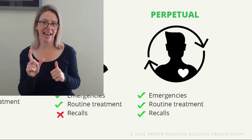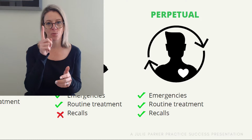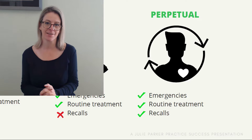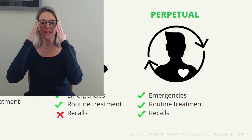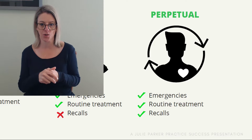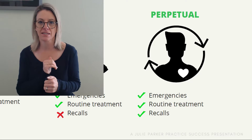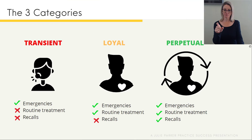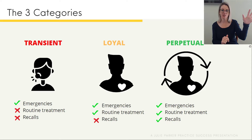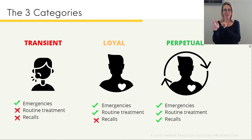The third category are the perpetuals. They are just like the loyals with one difference — they turn up every six months or at most every 12 months for their regular checkups and cleans. Oral health is very high on their priority. All they need is to know six months is up and they'll book straight in again. Whether there's a problem they're experiencing or not, maintaining their oral health is a habit of life. So: transients come once or twice just for emergencies; loyals for ongoing care but not recalls; and perpetuals for everything — ongoing care and recalls.